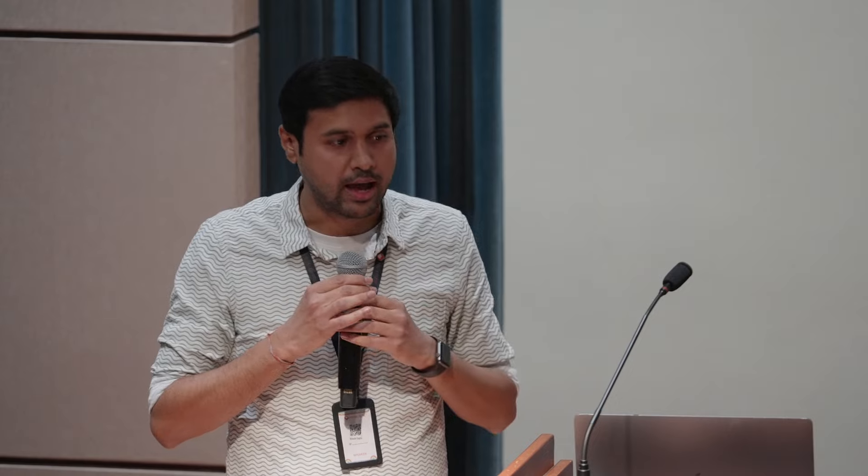If you're curious how to make an async version of a sequence, there's a simple helper you can use. This gives you a good segue for understanding what AsyncStream is. If you want to write this code, you can import a library by Apple called async-algorithms and you'll have an async version. What we're doing is taking AsyncStream, looping over the sequence, yielding the value, and once done, finishing it.